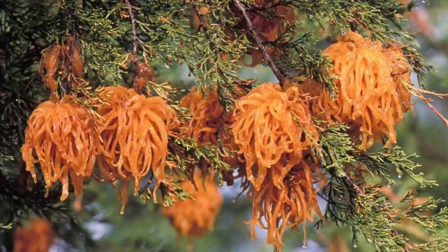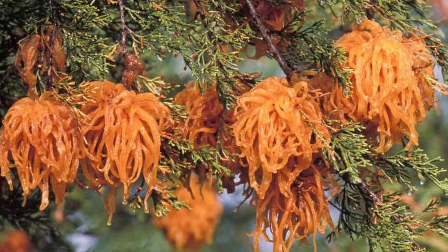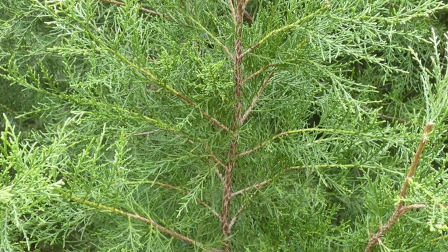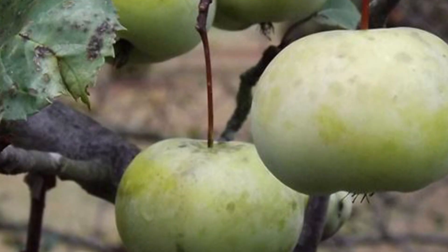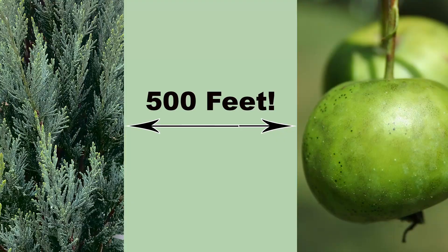One disease that all native crab apples are susceptible to is cedar apple rust. As the name implies, this fungal disease requires two hosts to complete its lifecycle: the eastern red cedar and an apple. To prevent your crab apples from getting cedar apple rust, plant them at least 500 feet away from any eastern red cedars. This can be tough in some parts of the southeast, but do the best you can.